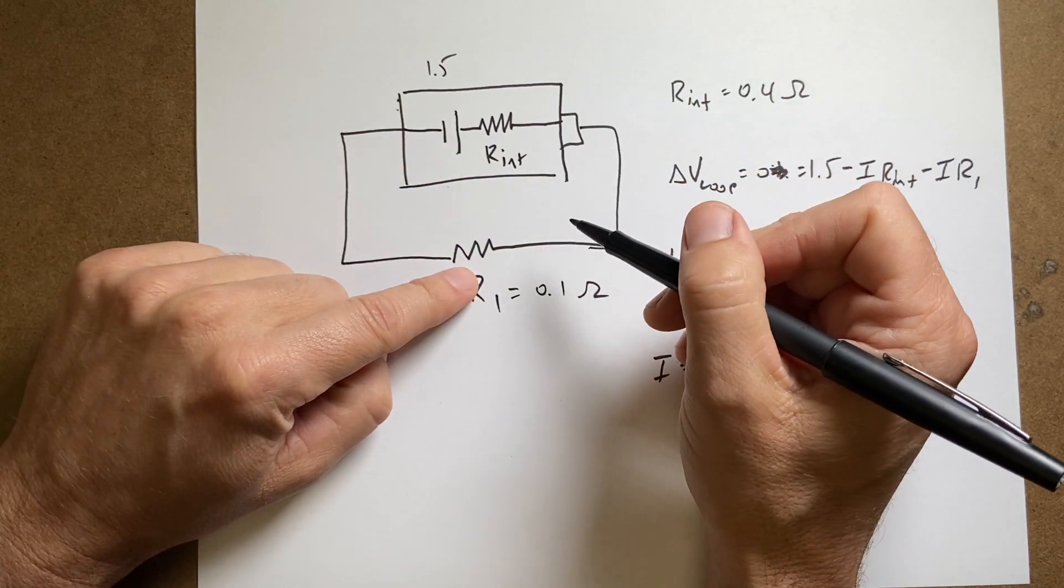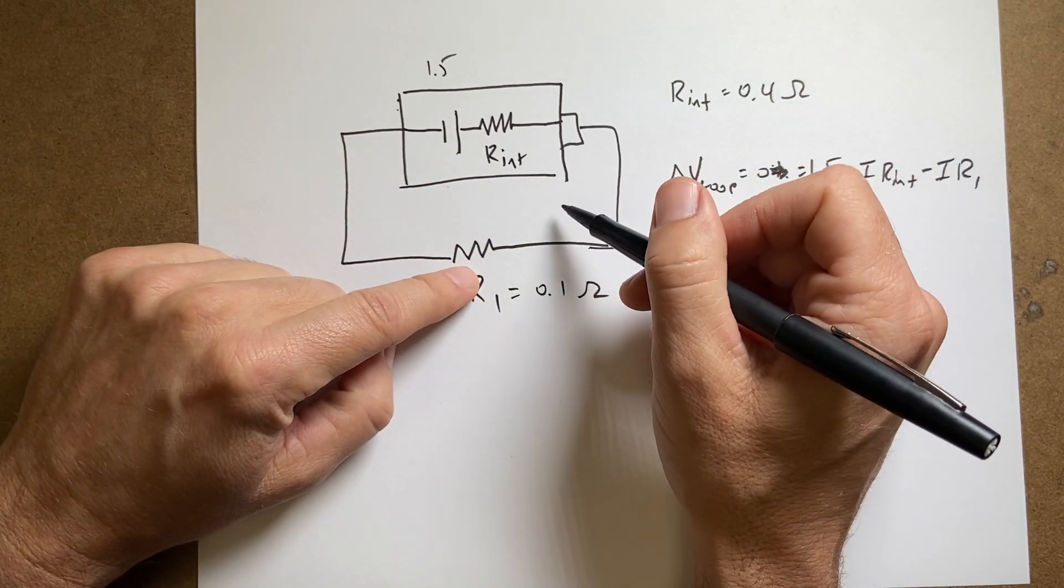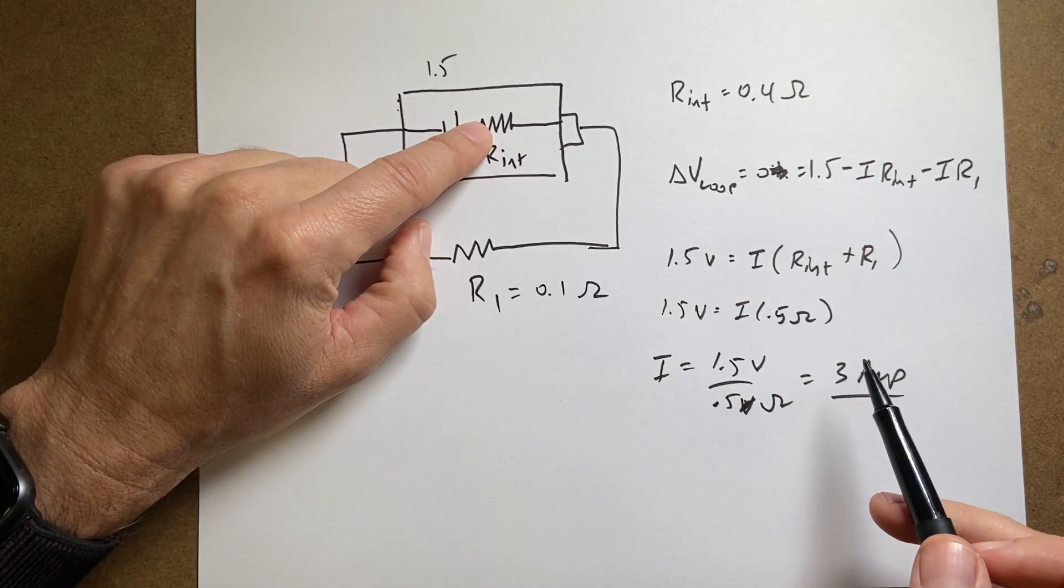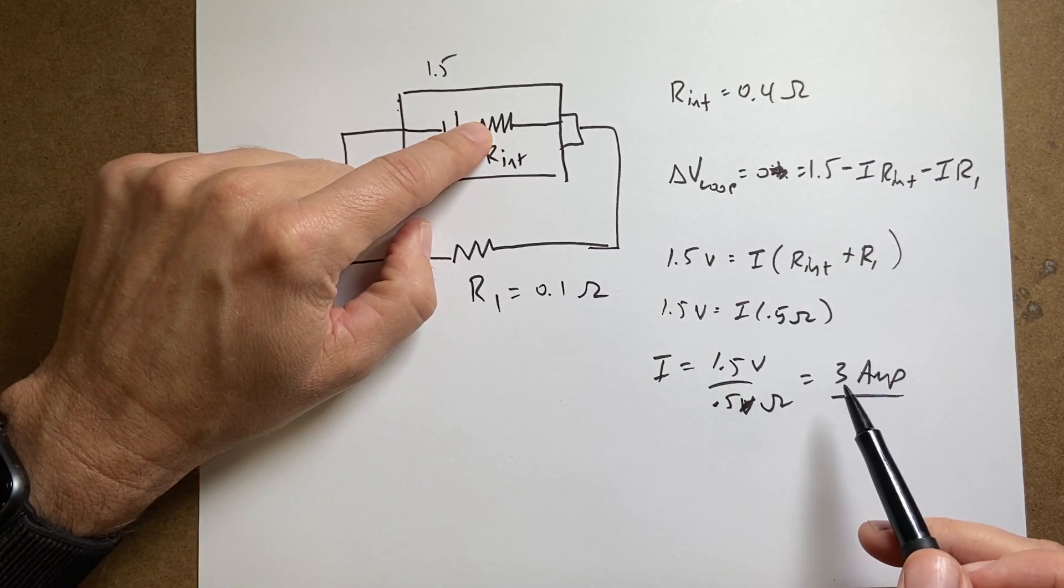Because of that extra resistor in there. And in fact, if I put in a superconductor with zero resistance, I still would get a current that's not infinity.